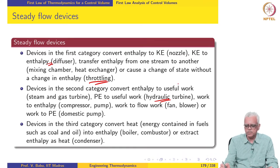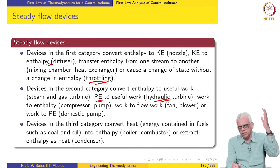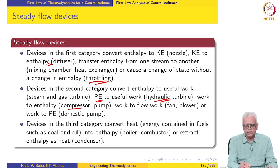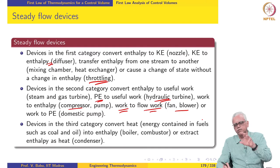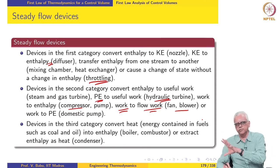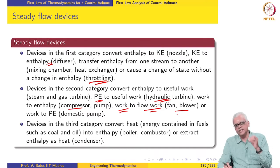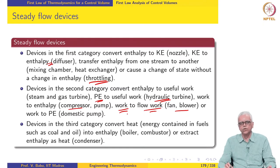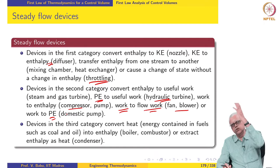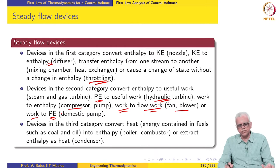In the case of a steam or gas turbine, enthalpy is converted to work. In the case of a hydraulic turbine, potential energy of the water stored in the dam is converted to work. In the case of a compressor or pump, work is converted to enthalpy. For a fan or blower, work is converted to flow work, since fans and blowers do not cause appreciable pressure change but move large amounts of fluid. Flow work is the amount of work needed to push fluid in and out of a device. In a domestic pump used to pump water from a ground-floor sump to an overhead tank, work is converted to potential energy — the opposite of a hydraulic turbine.